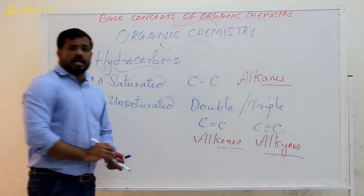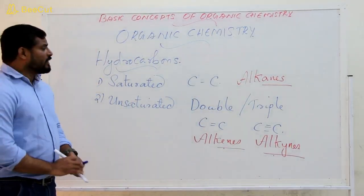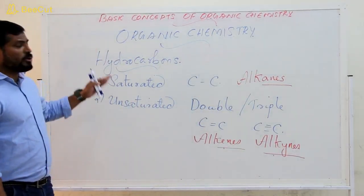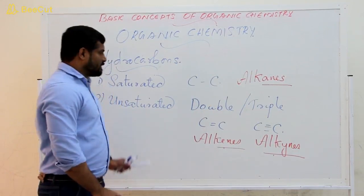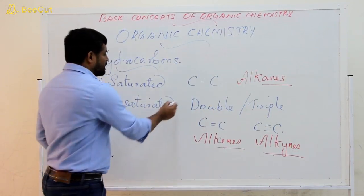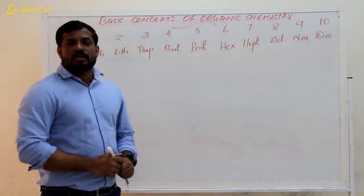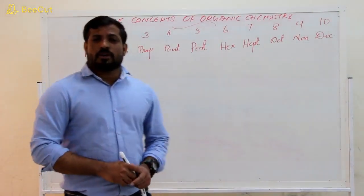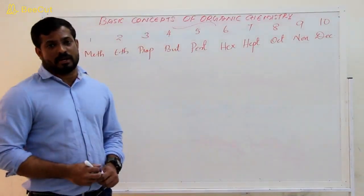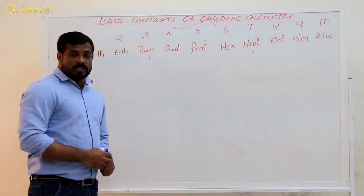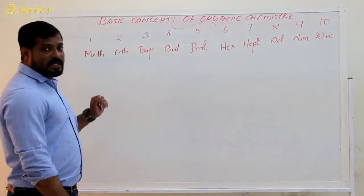In organic chemistry, for naming the compounds, we want to know about the number of carbon atoms present in it. The name of an organic compound is derived from the number of carbon atoms. To know this, we want to learn the basic idea.